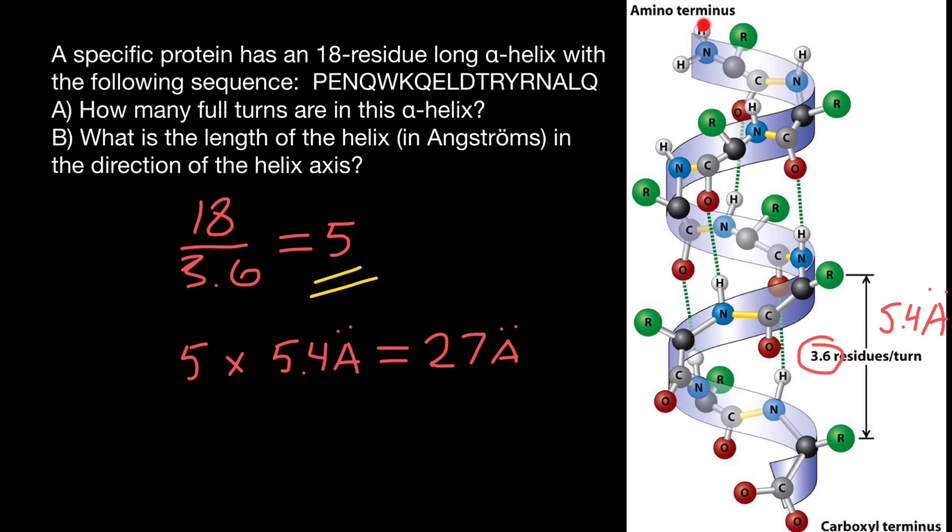And here's going to be the amino terminus, which is the beginning of this molecule. And here's the carboxylic terminus or end of this molecule. And the length is going to be 27 angstroms. So this is the answer to the second question.